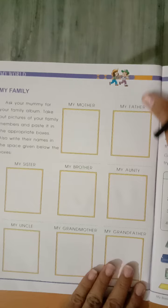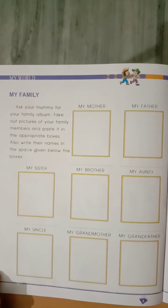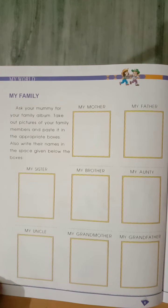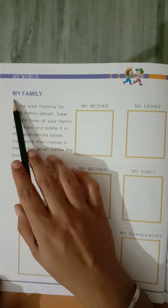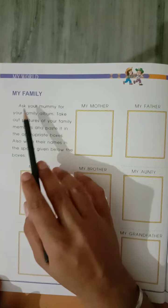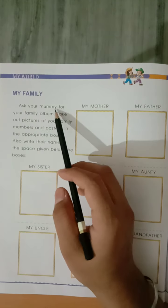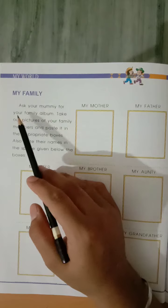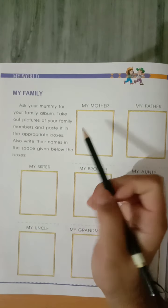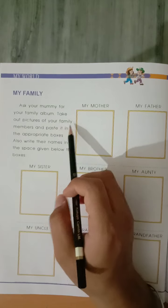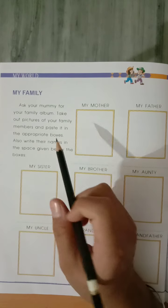This is what you have to do yourself. I will tell you what you have to fill and what you have to write. Your chapter number two is 'My Family.' Ask your mommy for your family album — you have to talk about your mother's family album. Take out pictures of your family members and paste them in the appropriate boxes.